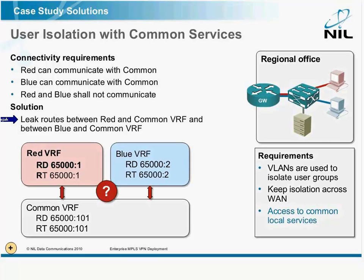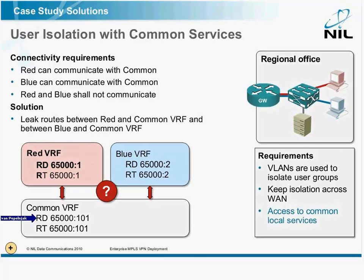Now the question is: the red VRF has certain route distinguisher and route target, same for the blue VRF. The common VRF obviously has its own route distinguisher and route target. How do we transfer routes between VRFs?